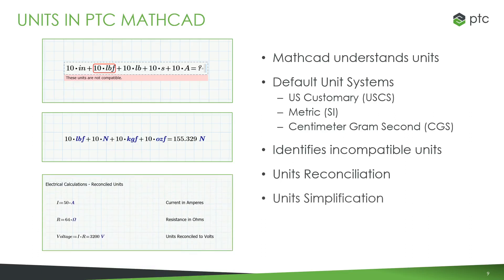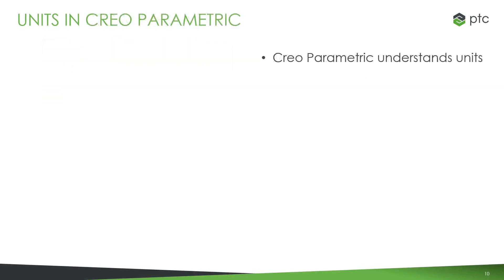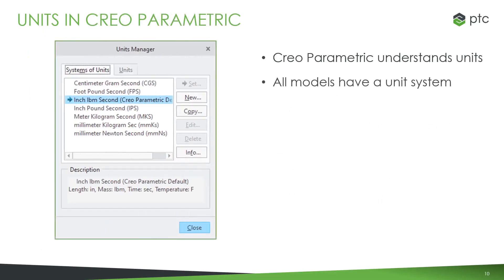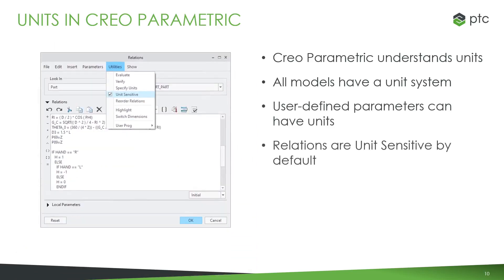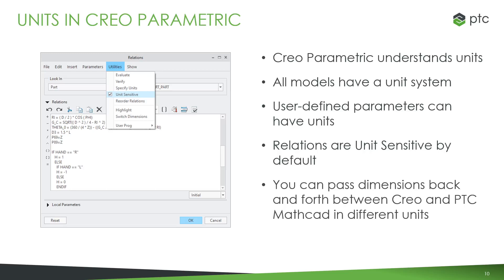Also, MathCAD can simplify units. For example, when you are working on electrical problems, PTC MathCAD understands volts, amperes, and ohms. Creo Parametric also understands units. All models have a system of units assigned to them. There are seven different systems of units that come built into Creo Parametric, and you can define your own custom systems of units. User-created parameters can also have units. And by default, unit sensitivity is turned on, so Creo Parametric understands the worksheet's units even if they are different than the model's units. You can pass inputs from Creo Parametric to PTC MathCAD in whatever units you want, and PTC MathCAD will understand them. Creo Parametric also understands the units of the outputs from MathCAD's engineering calculations.